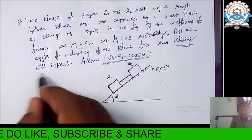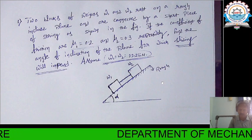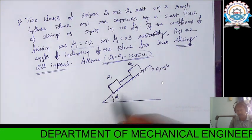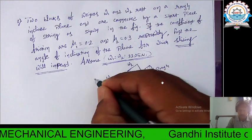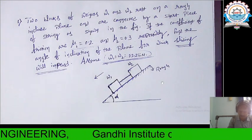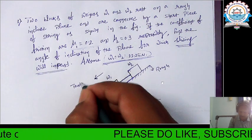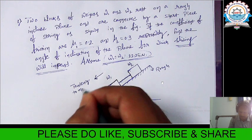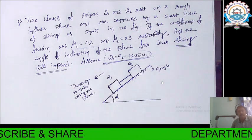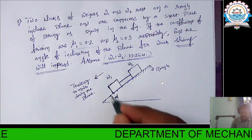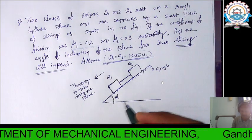The question asks us to find the angle of inclination of the plane for which the sliding will impend. Sliding will impend indicates that the sliding is about to take place. These two bodies will tend to move down the plane. So let us find the value of alpha, the angle of inclination of the inclined plane for which sliding will impend.